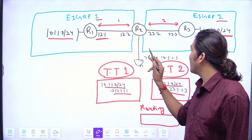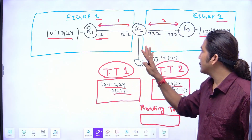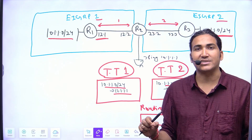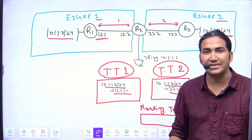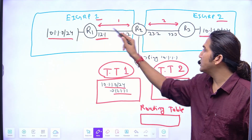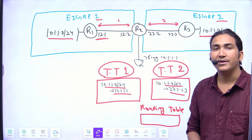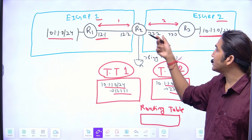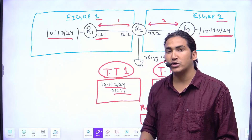So now what you need to do: pause this video, think about this topology and scenario, and write your answer in the comment section. Which path will router 2 install in its routing table? Will router 2 forward traffic for 10.1.1.0/24 towards router 1 or router 3? What will be the next hop IP address on router 2 for this subnet?